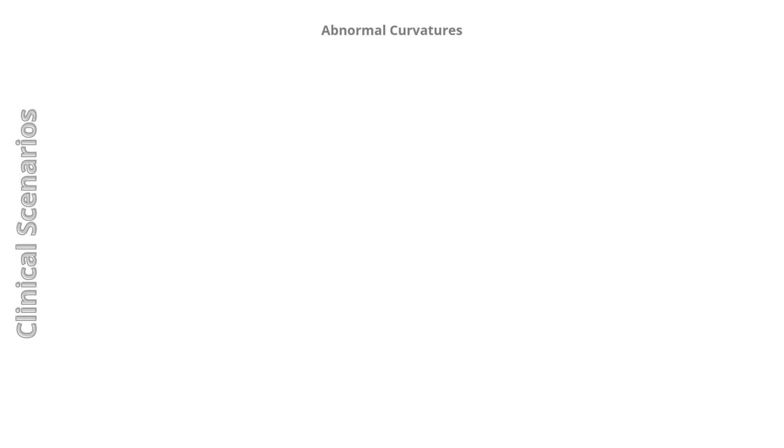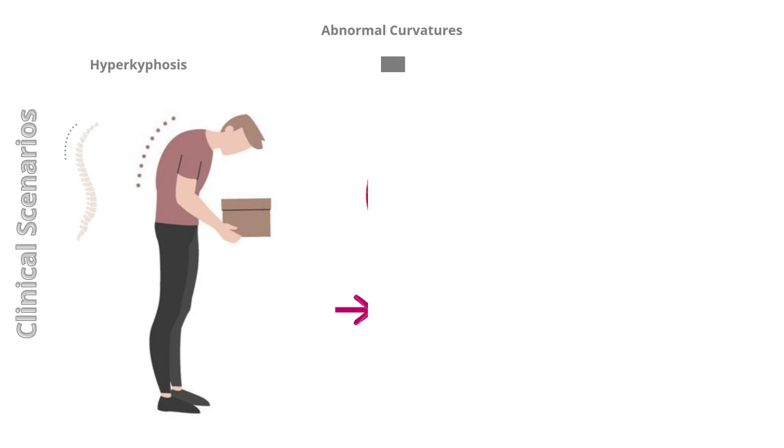Let's consolidate that knowledge by applying it to a clinical scenario on abnormal curvatures. As we have seen, the spinal column has four curves that function to provide flexible support and facilitate movement. Abnormal curvatures can also occur and are often the result of developmental abnormalities or pathological processes. We will look at hyperkyphosis, hyperlordosis, and scoliosis.